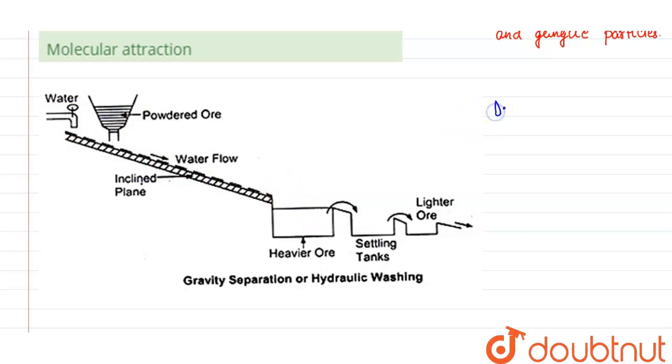There will be difference in density between the particles. The higher density will be collected here, and the lower density here. The lighter ore will be collected from here. So this is gravity separation or hydraulic washing.